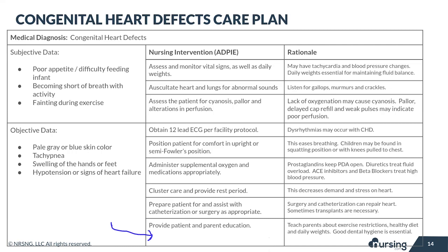You want to provide patient and parent education. In addition to talking about treatment options, think about exercise restrictions, reducing stress on the heart, healthy diets, and monitoring weight closely. Always remember it's important to talk about good dental hygiene, because children with congenital heart defects are at an increased risk for tooth decay.